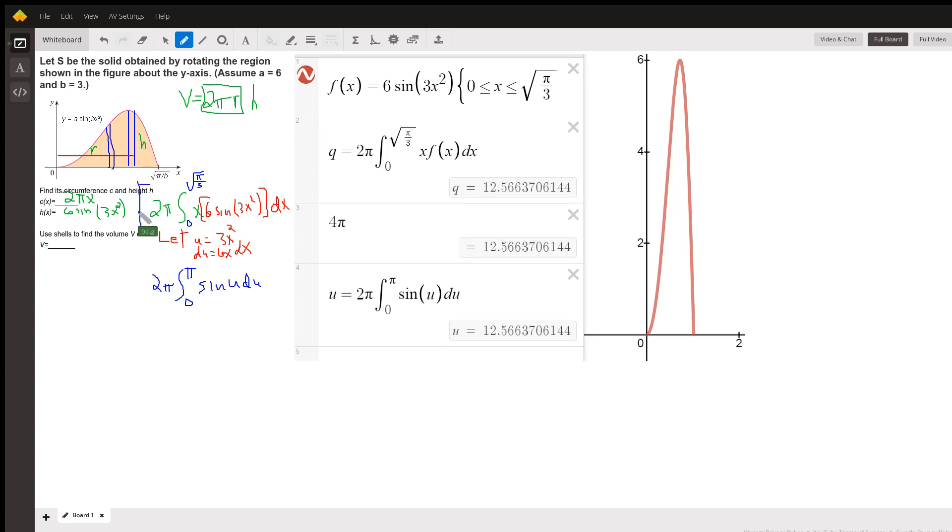So we need to evaluate this definite integral. It looks like it evaluates to 12.5663, and I determined the answer is 4π. Here is the integral after having used u-substitution, and I get the same answer, 12.566, which is 4π.